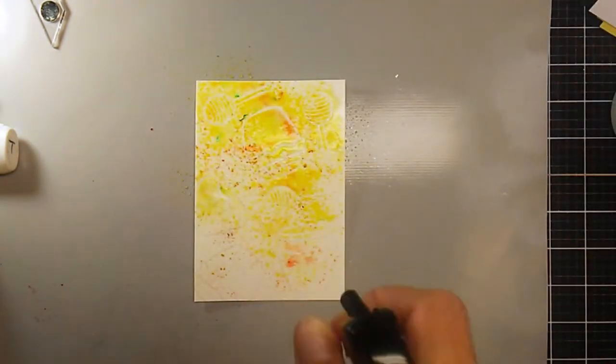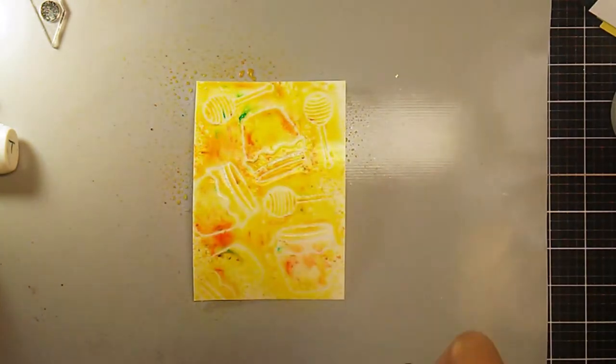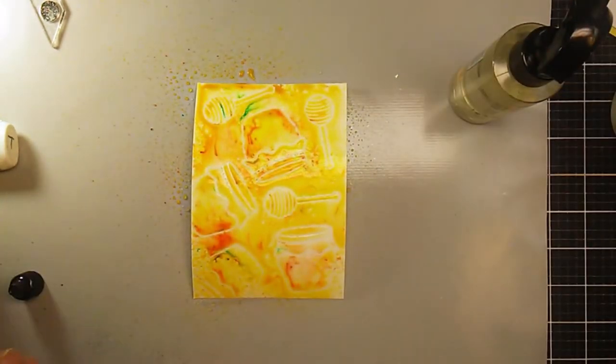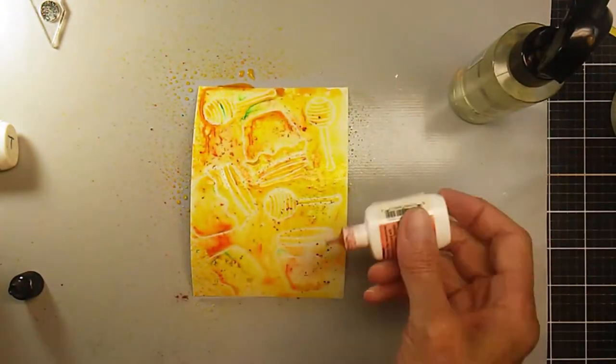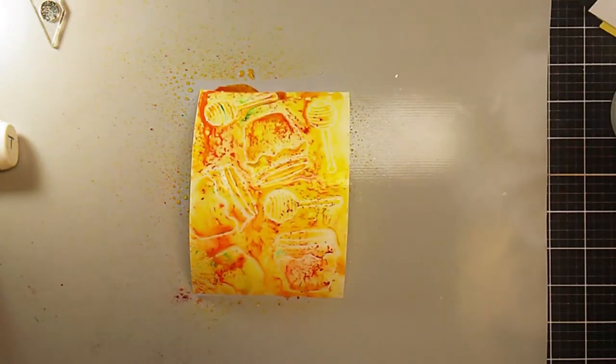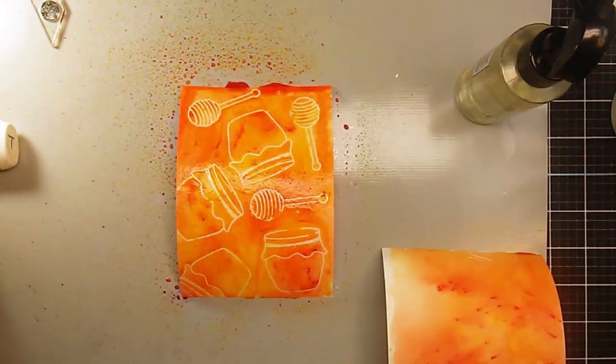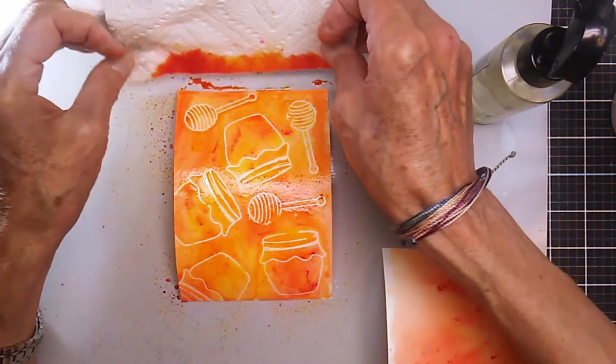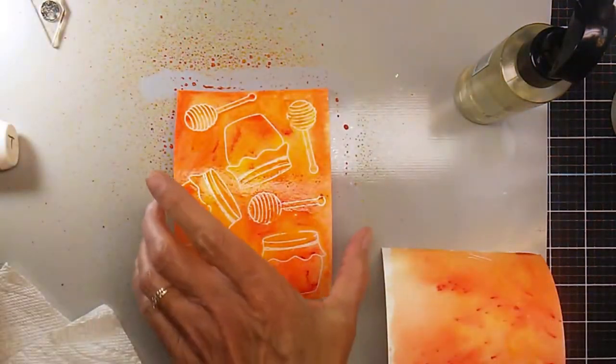It doesn't take a whole lot of powder to get really good color, so the next thing I did was spritz it with my distress spray bottle. Then I thought it needed some more oranges, so I went back with the orange and here I am just sopping up some of the extra water.